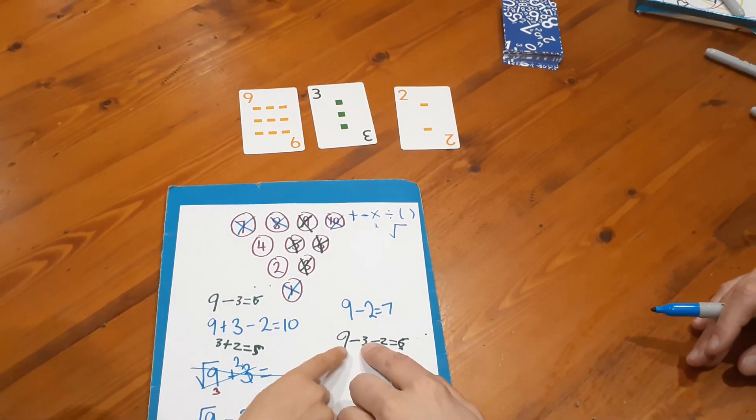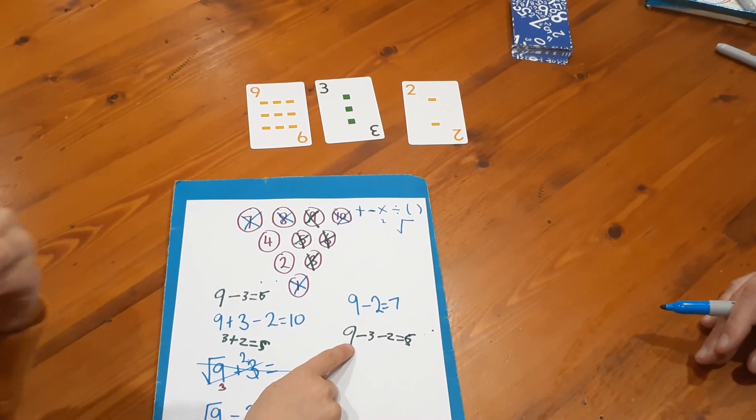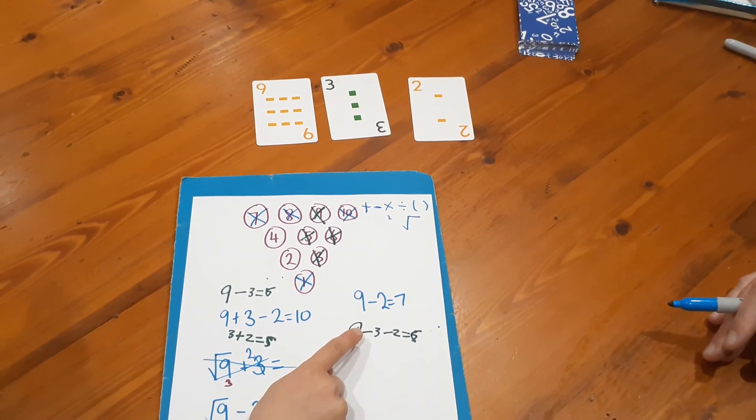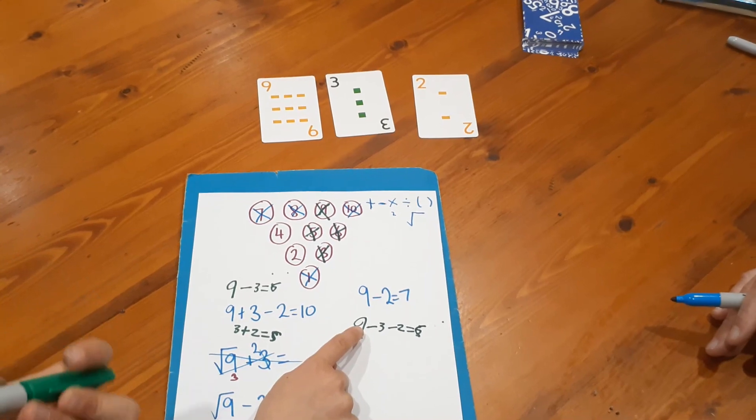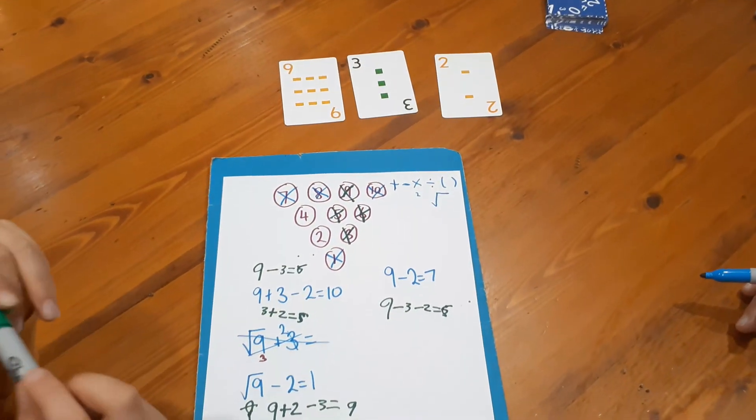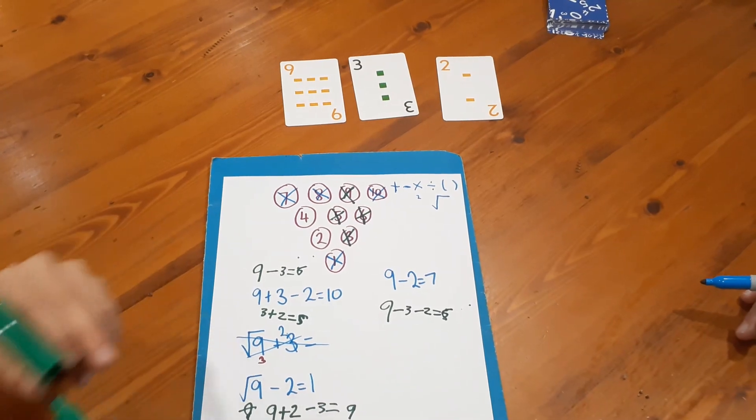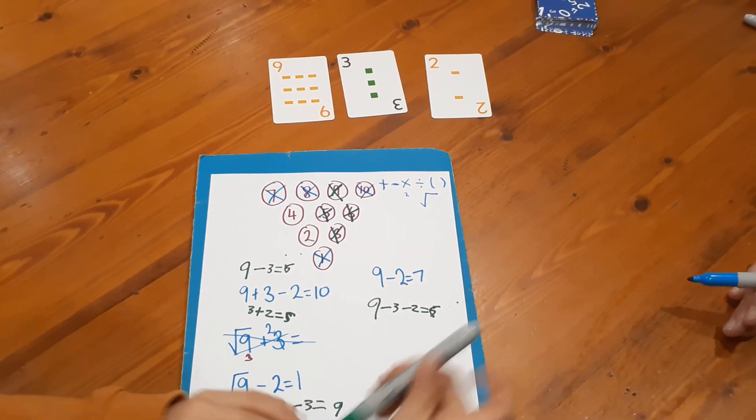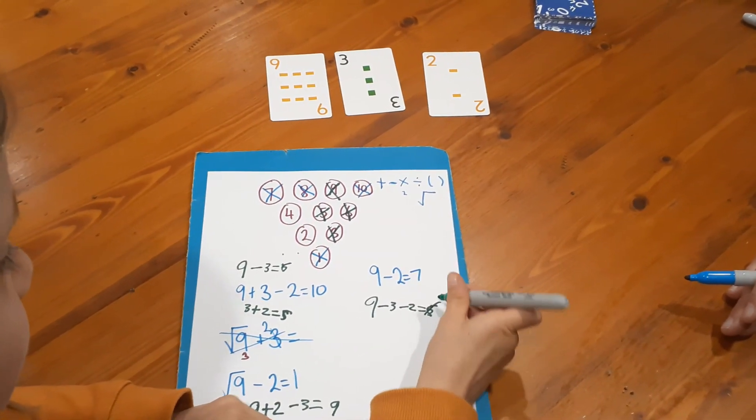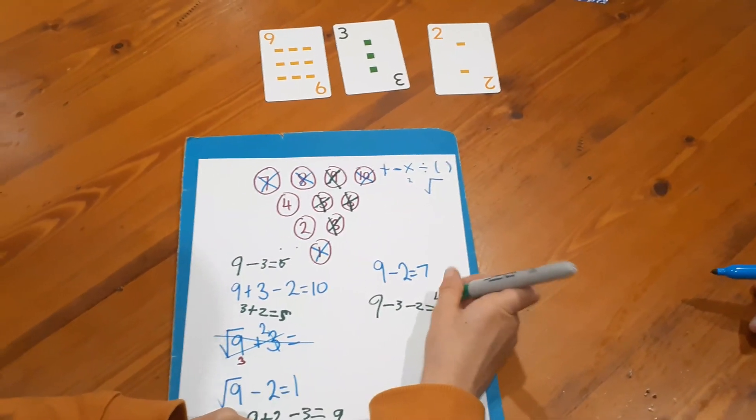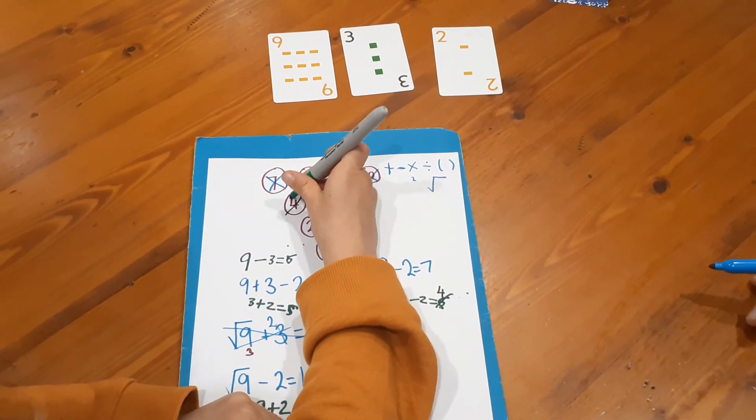So that equals... no, that equals... nine take away three equals... oh slow down. Nine take away three equals six, take away two equals four. Just cross it out - the six and cross out the four. Now the two.